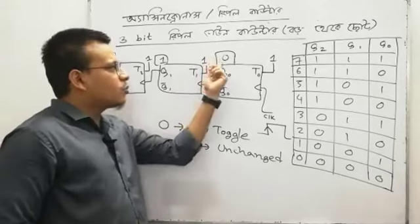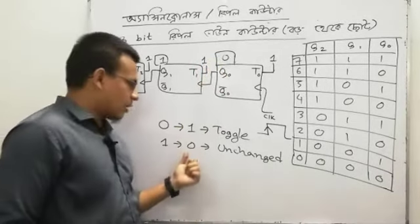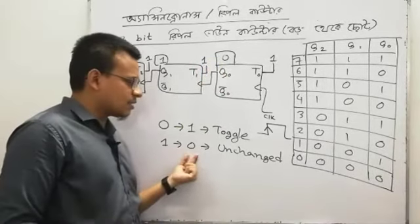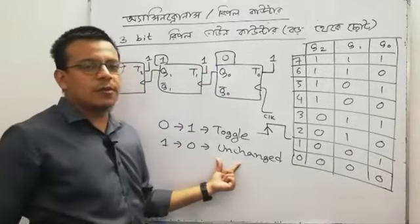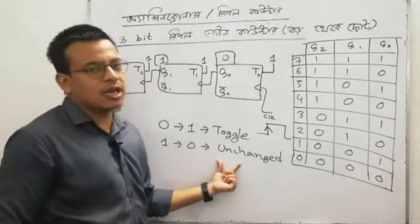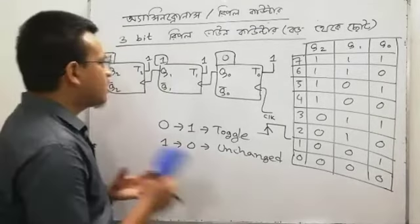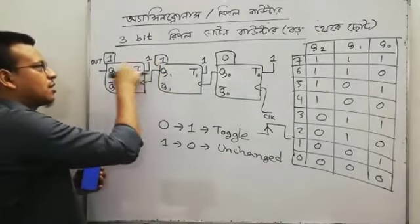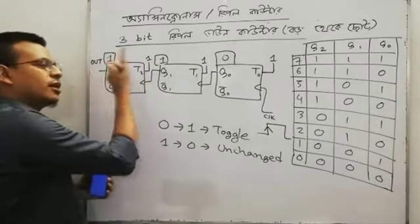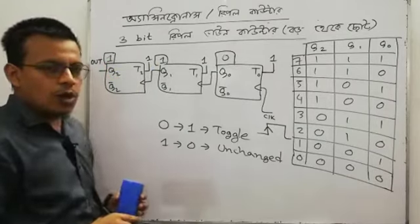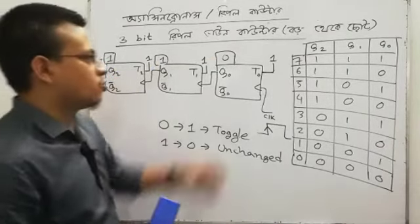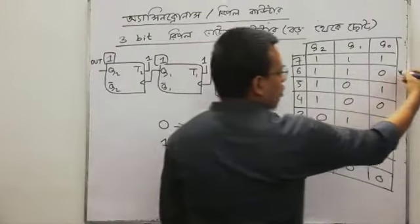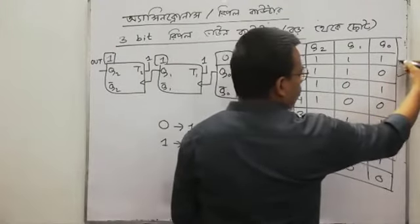Let's see — this output 1 will be 0. 1 will be 0, so what will happen? Flip-flop will be unchanged. If you have unchanged, this output is 1. If this is unchanged, this output will be 1. So 1, 1, 0 will be 0. If 1, 1, 0 will be 0, then we will get 1.